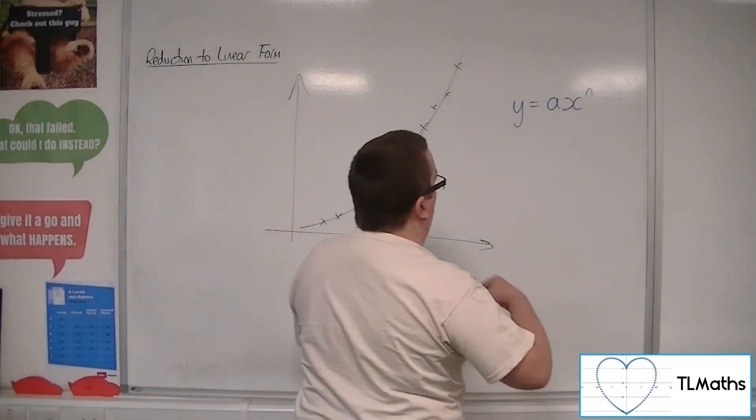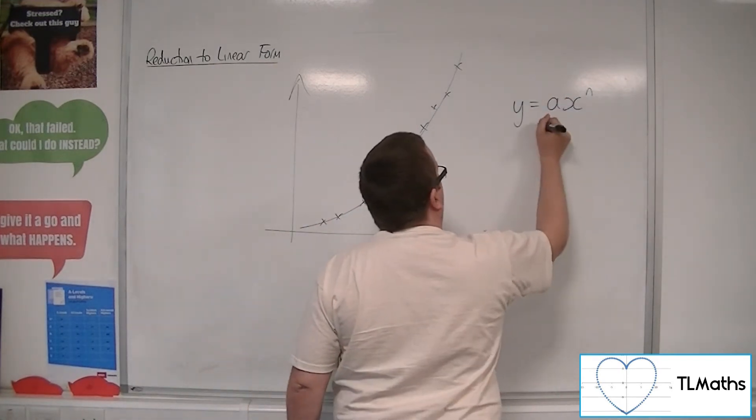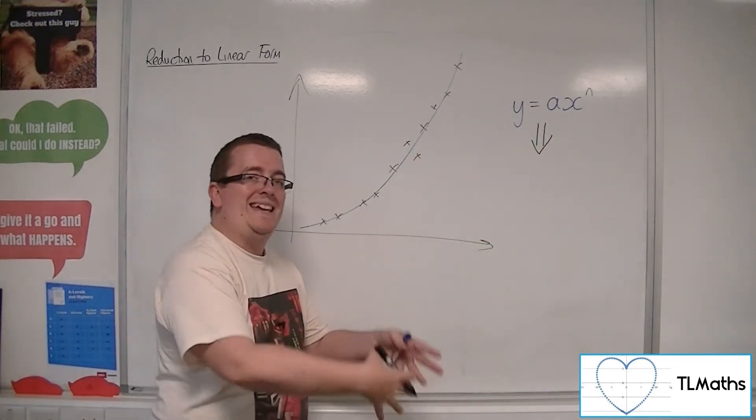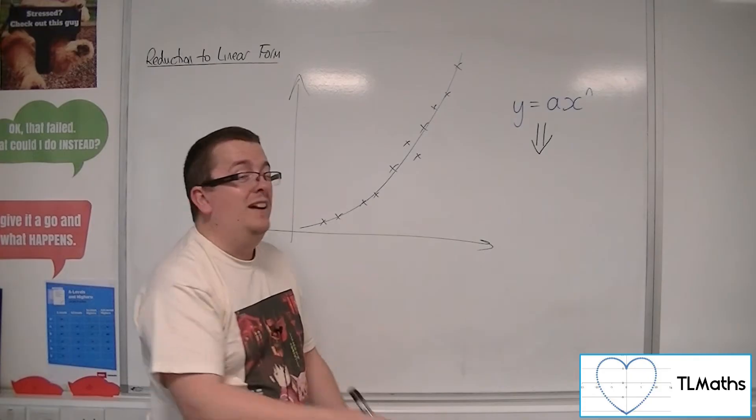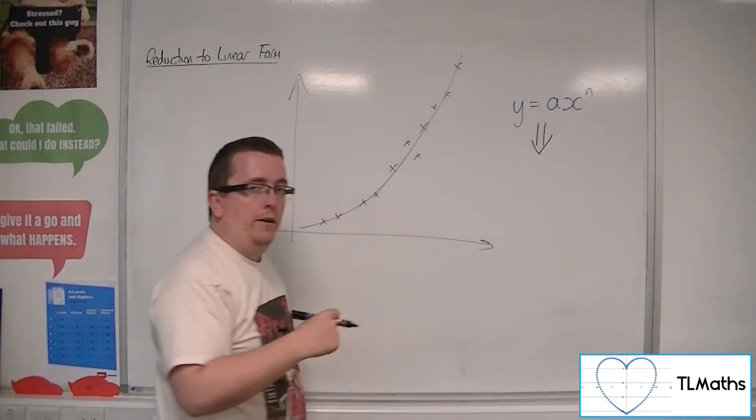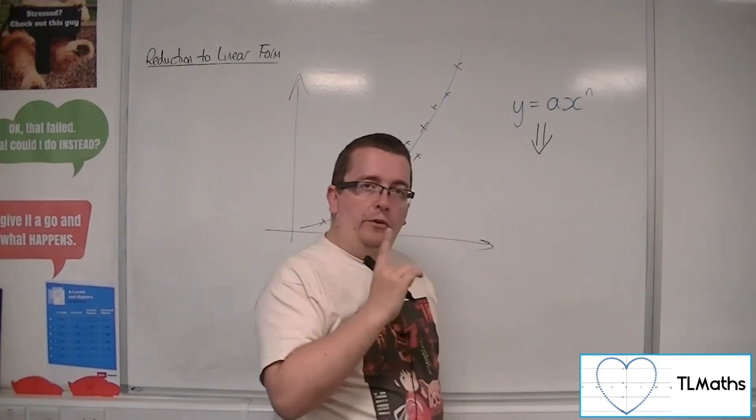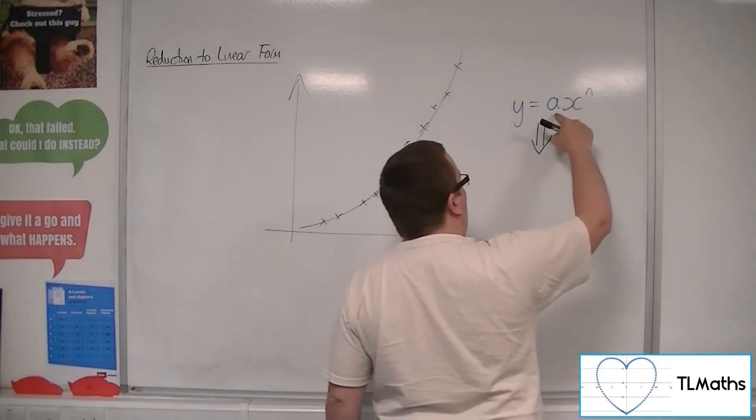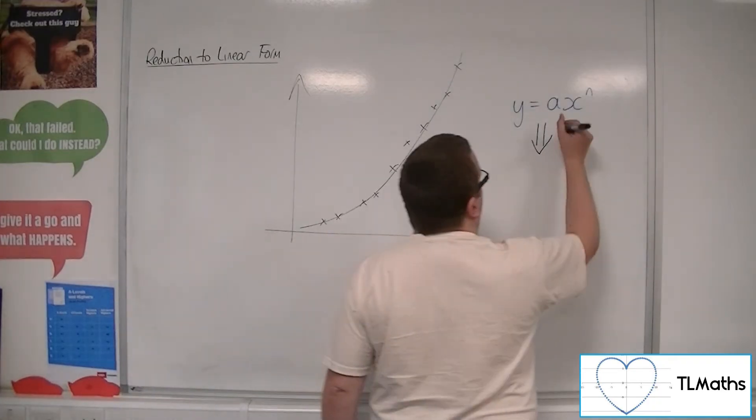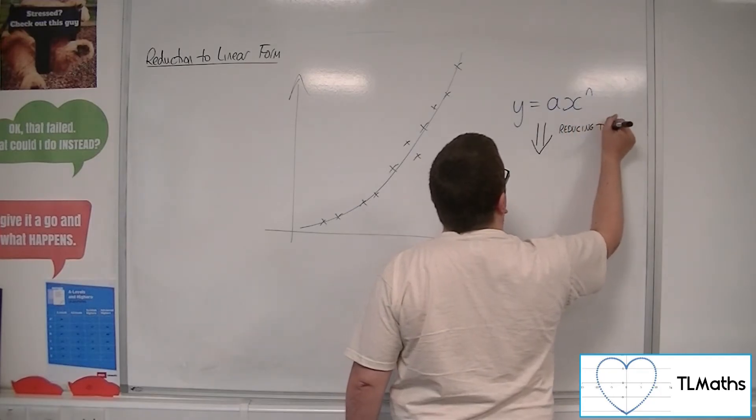So what we're going to do is we are going to use a linearization of this. So we go through a process of taking logarithms of both sides. The reason we're going to take logarithms is because of that power, makes it easier for ourselves. So I'm going to go through this process in the coming videos of how we get from that, and we go through this process of reducing to linear form.